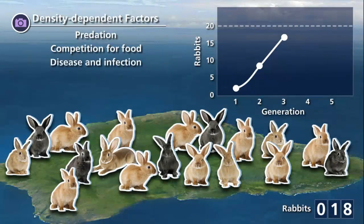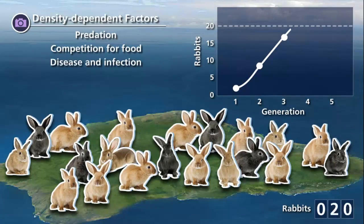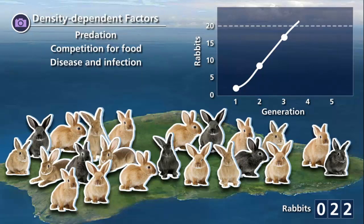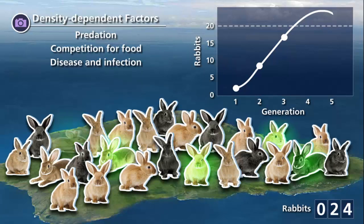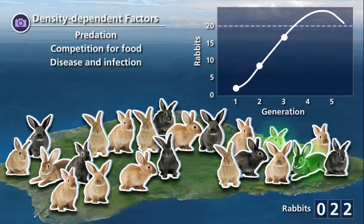Disease or parasitic infections are also density-dependent factors. When the population is larger, there is crowding, and disease agents can pass more easily from one rabbit to the next, leading to reduced survival rates.